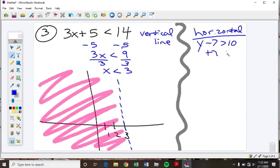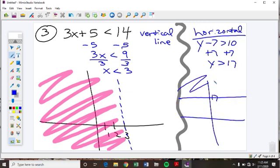All right, here I would add 7, and I'd get y is greater than 17. So I'd make a horizontal line through 17, and I would shade above that. Okay? You run into a horizontal line situation. And we'll stop there for today.